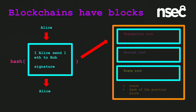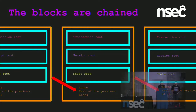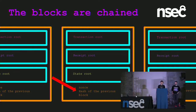Blocks contain the roots of three Merkle Patricia trees: the transaction root, the transaction receipt root, and the state root. Transactions are identified by their hashes. Each block includes the hash of the previous block and all the data in it — thus they're chained together, building out a data structure you can think of like an append-only linked list. Because these are cryptographic hashes and they are irreversible, this makes the blockchain immutable.